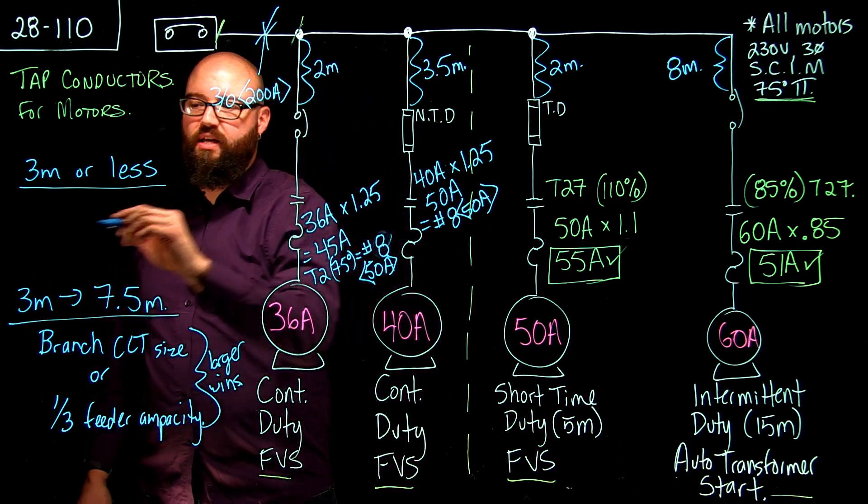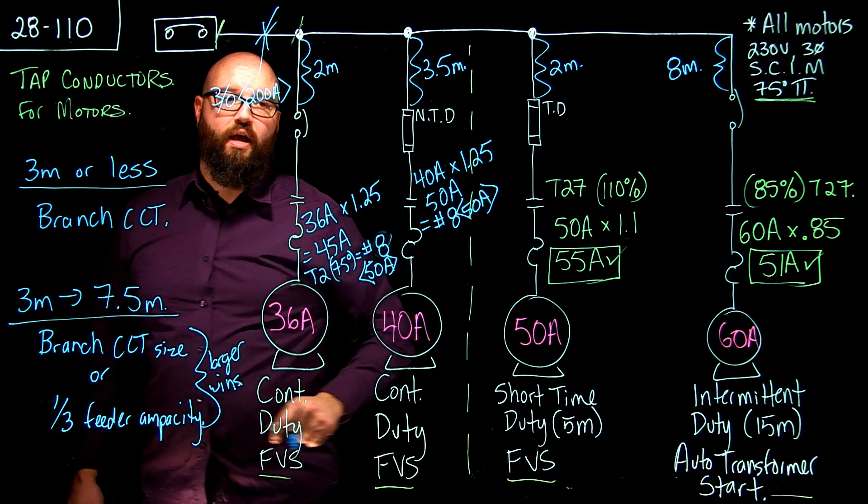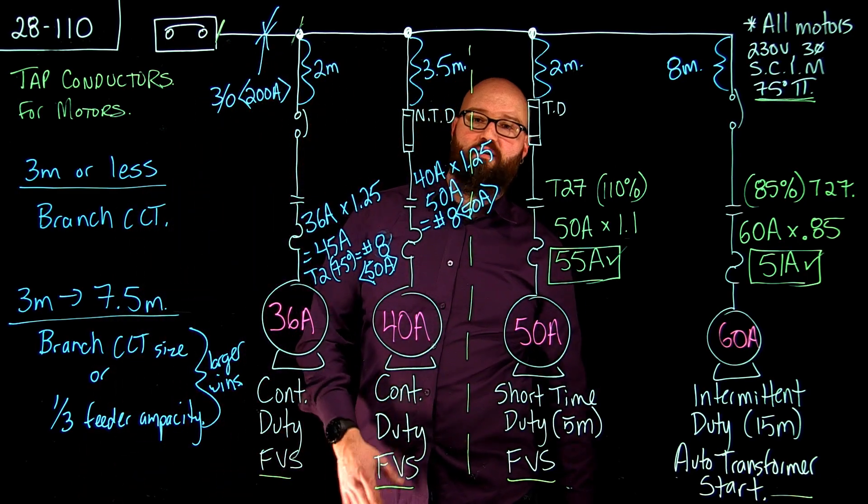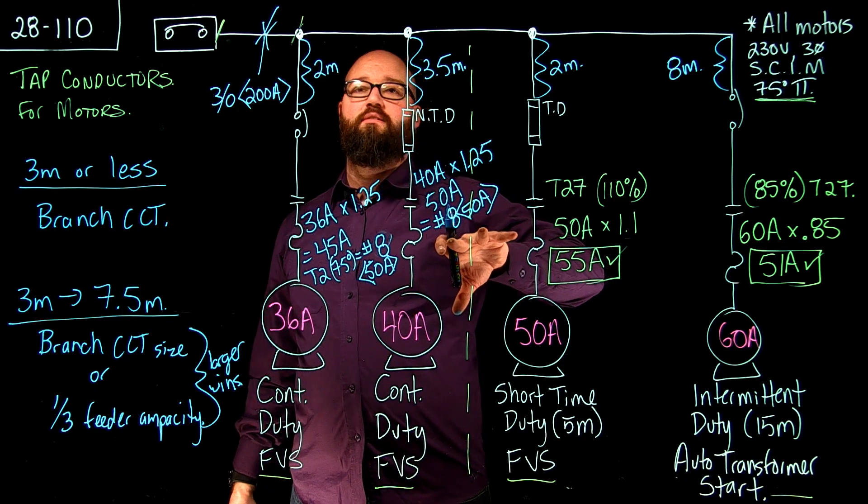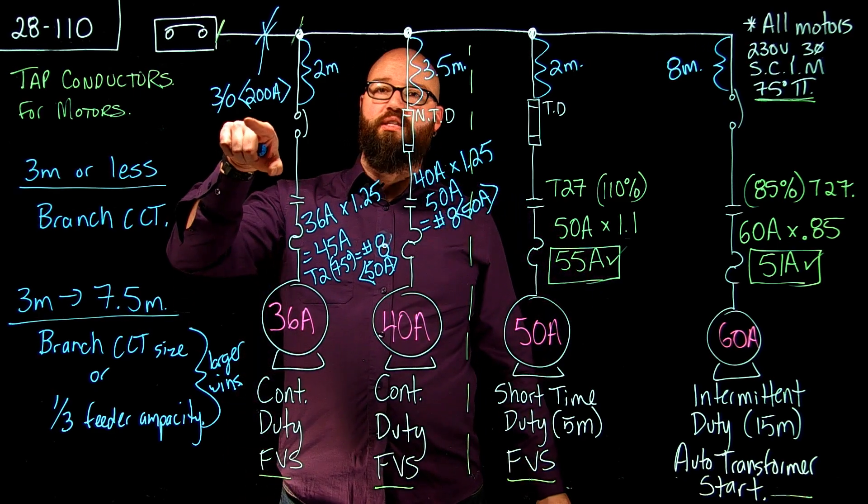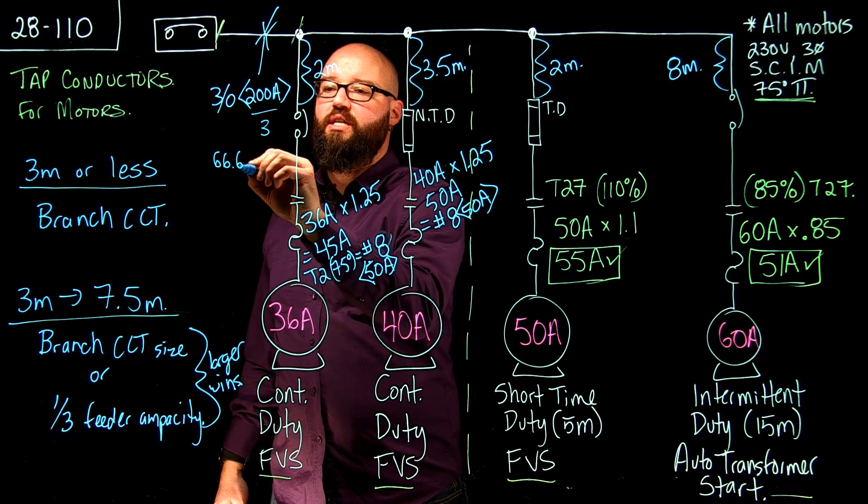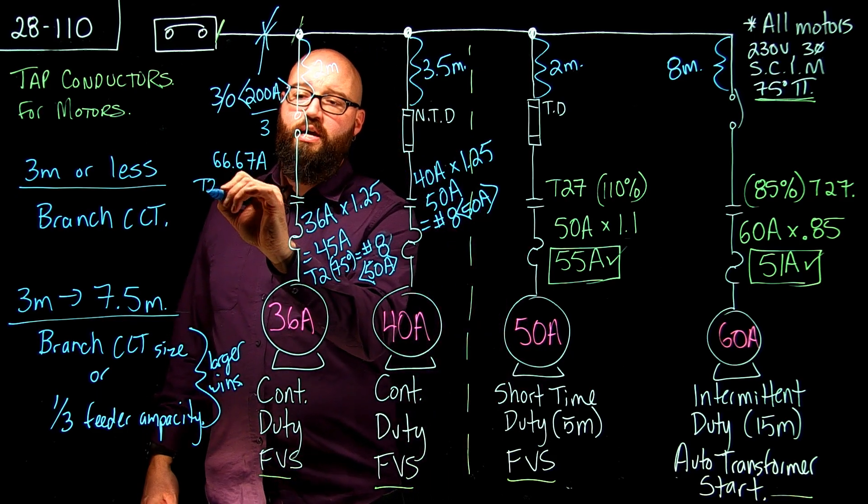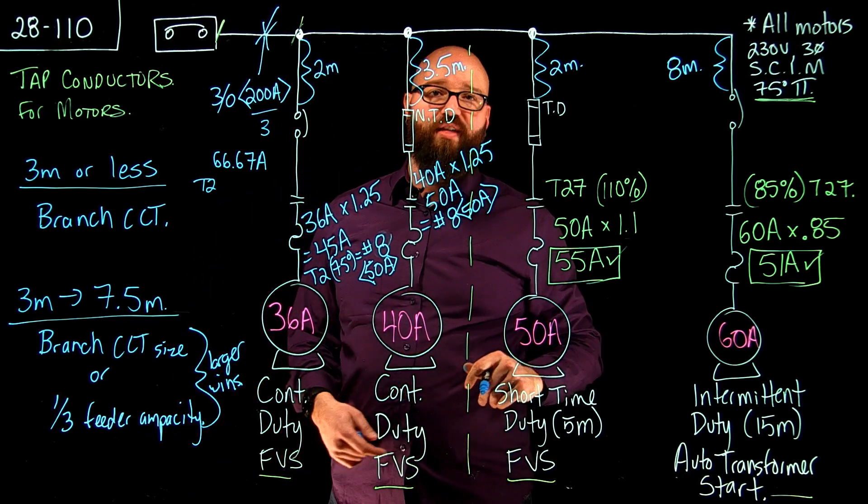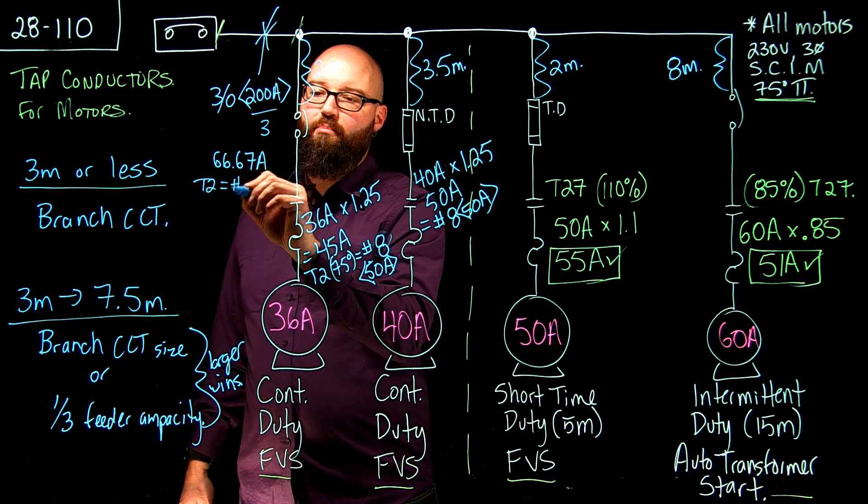it becomes the minimum ampacity for this tap conductor. 3 meters or less what we did here really it's just whatever your branch circuit is. That'll suffice as a tap conductor. So we have a choice now between a number 8 or one-third this feeder ampacity. So we're going to take that divided by 3 gives us 66.67 amps which if I was to go to table 2 and size a conductor based off of that one-third ampacity I would select a number 4.